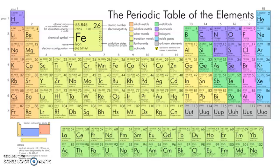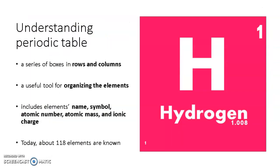Today I will be giving you an overview of the periodic table. A periodic table looks like this and you may have seen this in your textbooks or on your classroom wall. The periodic table is a series of boxes arranged in rows and columns. It is a very useful tool for organizing the elements.